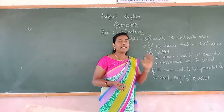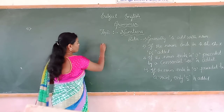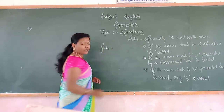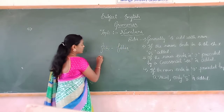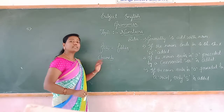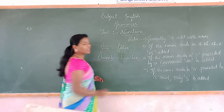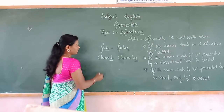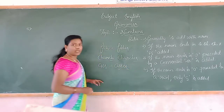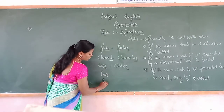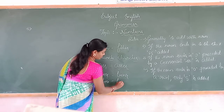Second rule: if the noun ends in S, SH, CH, or X, then ES is added in the plural form. For example, fish ends with SH, so we add ES. Church ends with CH — we add ES, making 'churches.' Words ending in S also take ES. Words ending in X, like box and fox, become boxes and foxes.